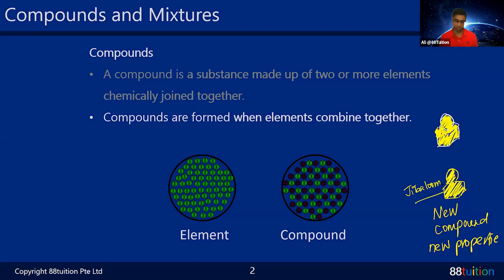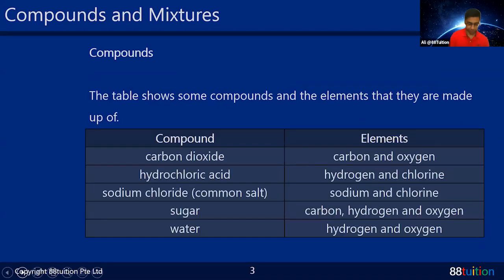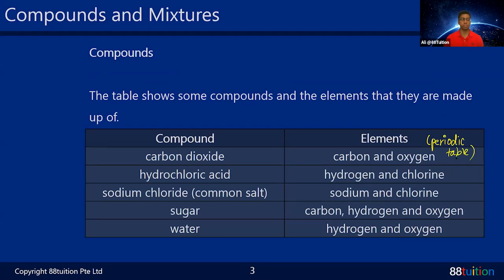We can name this new shape 'jibalu' — it's a new shape you don't know the name of. So an element and a compound combined together chemically gives something new. Elements can be found on the periodic table. Compounds cannot be found on the periodic table, but their constituents can. For example, carbon dioxide CO2 — carbon and oxygen can be found individually but not as a combined entity on the periodic table.